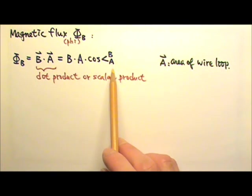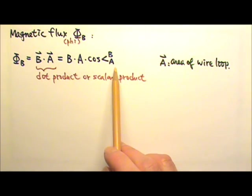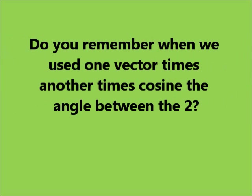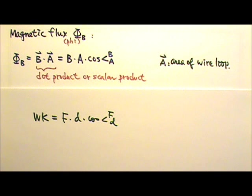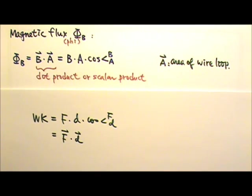We have used the dot product before. Do you remember when we used one vector times another times cosine the angle between the two? It's work. The work done by a force equals the force times the displacement times the cosine the angle between the two. So work is also a dot product. It is force dot displacement.